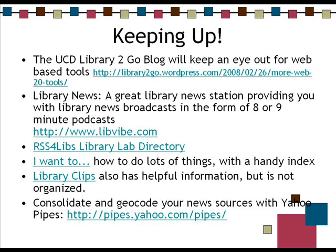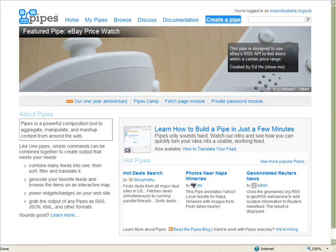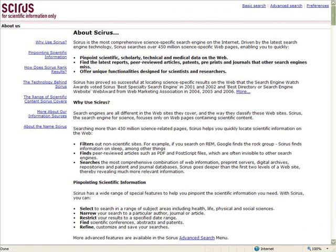Yahoo Pipes lets you create a free pipe by cutting and pasting the URLs of RSS feeds you're interested in, and then it gives you a URL to use as your actual feed. You can also pinpoint scientific, scholarly, technical, and medical data on the web — similar to Google Scholar but much more targeted, specifically for science.